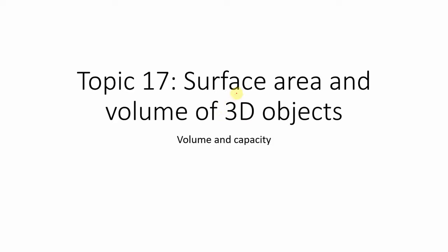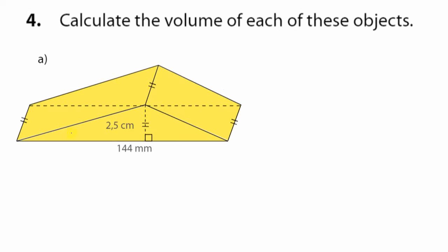This is a continuation of the previous video on volume and capacity, which forms part of the topic of surface area and volume of 3D objects. For number four of activity 17.2, you have to calculate the volume of each of these objects. In this particular case, we have a triangular prism, as we have a triangle on both sides. We can orient this solid so that the triangle is at the bottom and at the top, connected by rectangular faces.